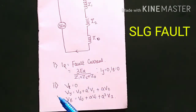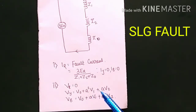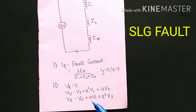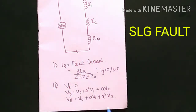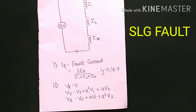The phase voltage VR is equal to zero. VY = V0 + A²V1 + AV2, and VB = V0 + AV1 + A²V2. This is the main formula to solve any numerical based on single line to ground fault.